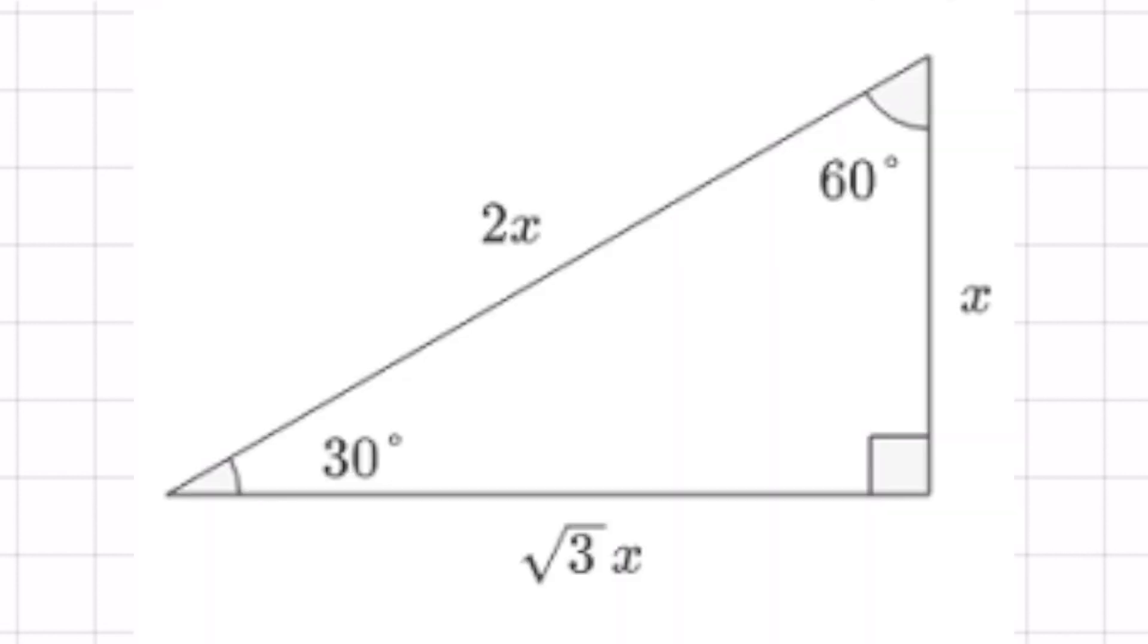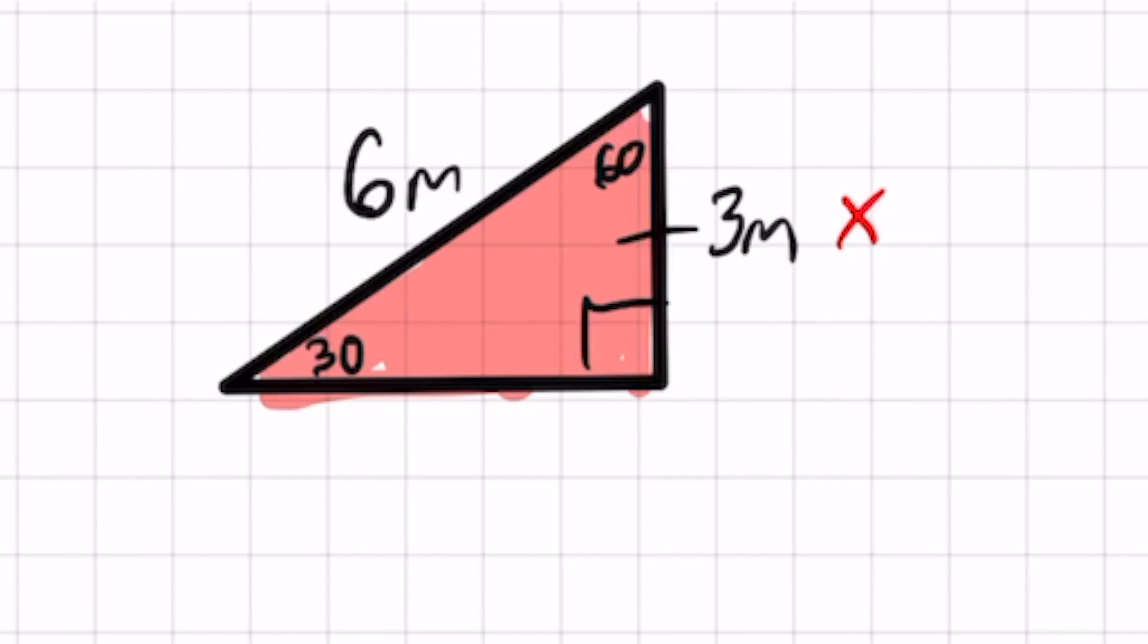So in a 30, 60, 90, the one across 30 is going to represent my X. The hypotenuse is twice X. So that's how we got 6M. And the one across 60, the one we're trying to find, is X root three.